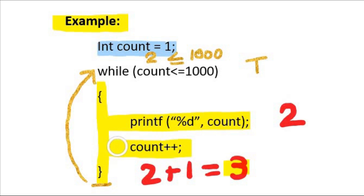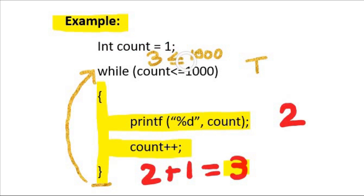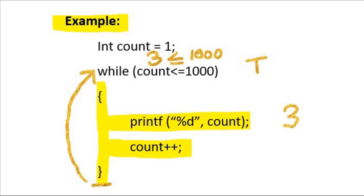Now the value of count is 3. After executing count++, the body of while loop is ended and control will again move to the start of loop. The condition will be tested again. The value of count is now 3, and 3 is less than or equal to 1000, so the condition is true. The body of while loop will execute and it will print 3 on the output screen. The value of count will become equal to 4. These iterations will continue until the condition count is less than or equal to 1000 goes false.